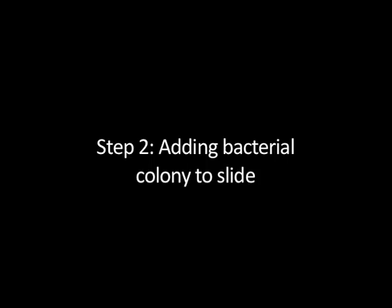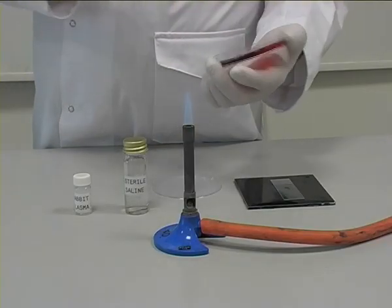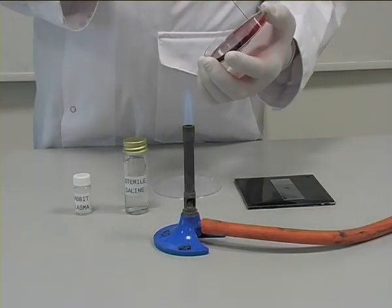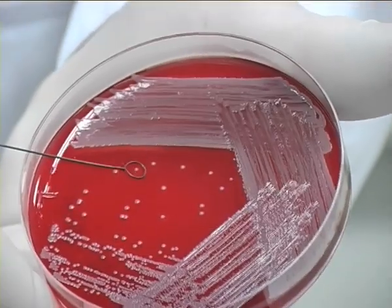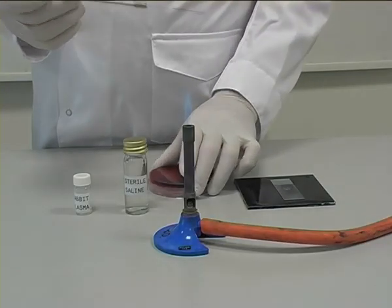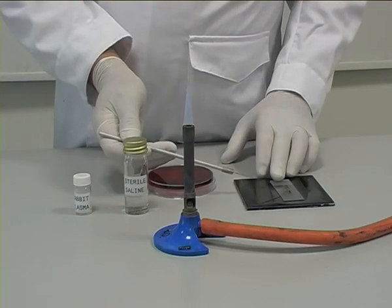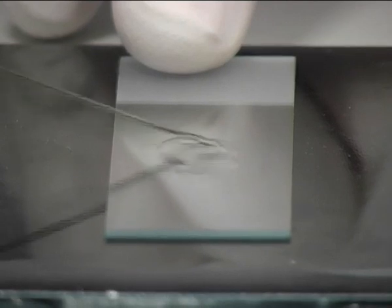Step 2: Adding a bacterial colony to the slide. A sterile inoculating loop is used to remove an isolated colony from an agar plate. It is mixed with a drop of saline on the slide to form a milky white suspension.